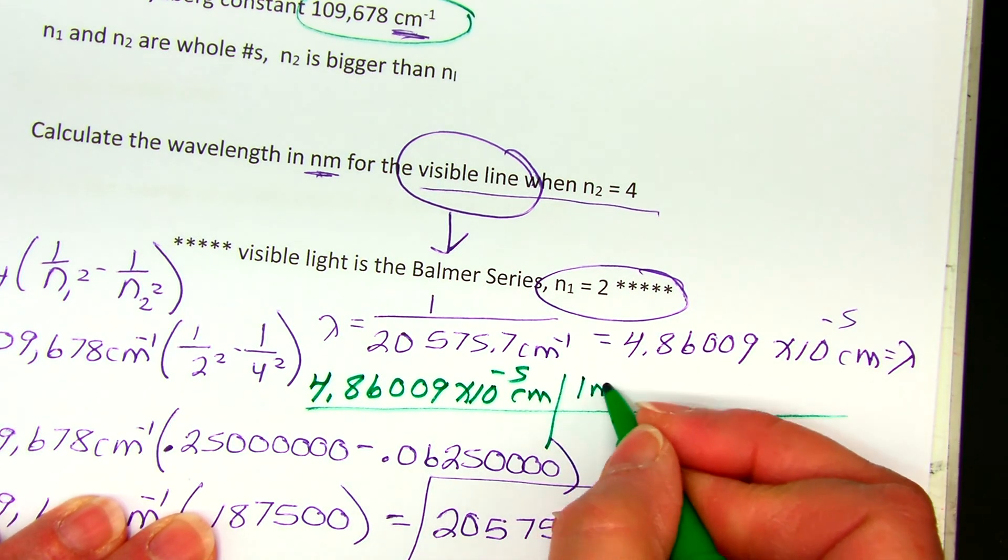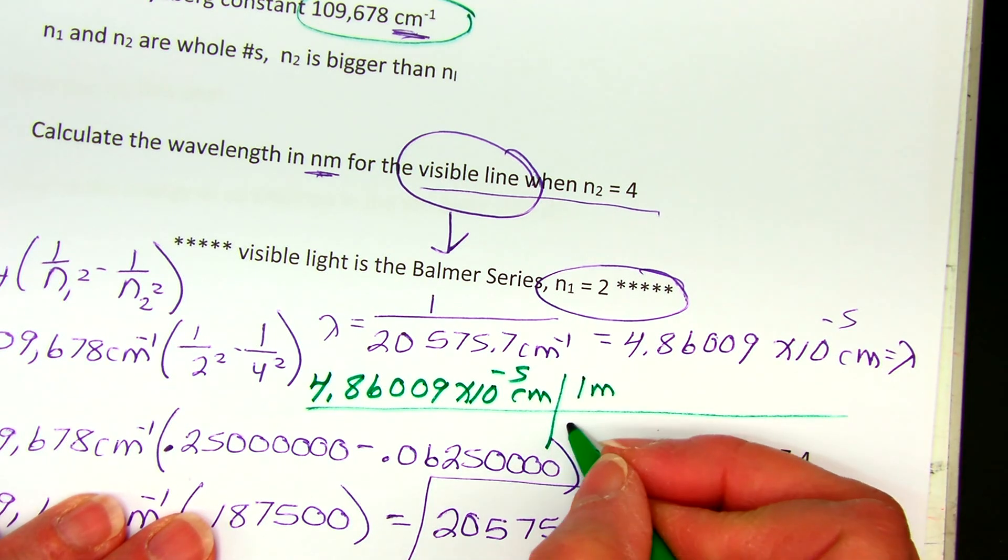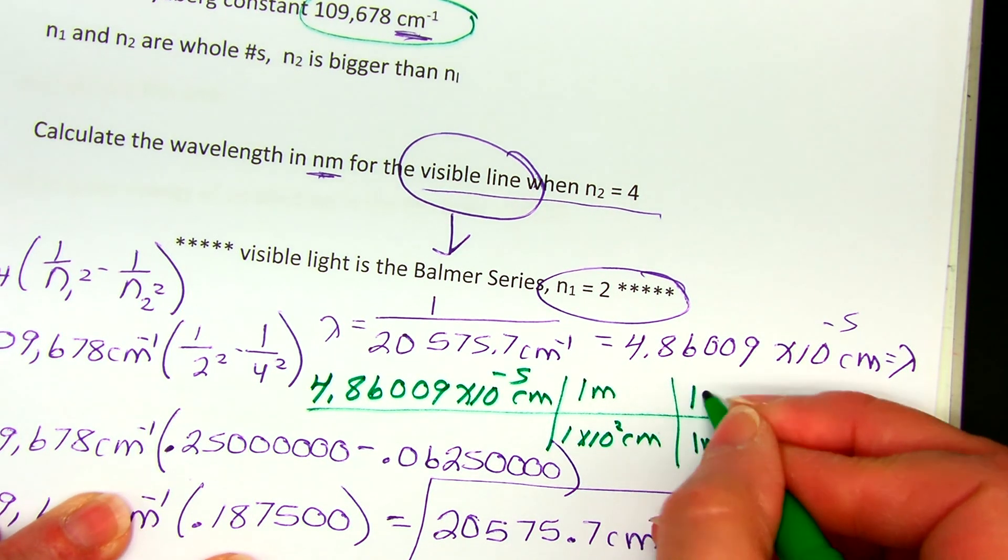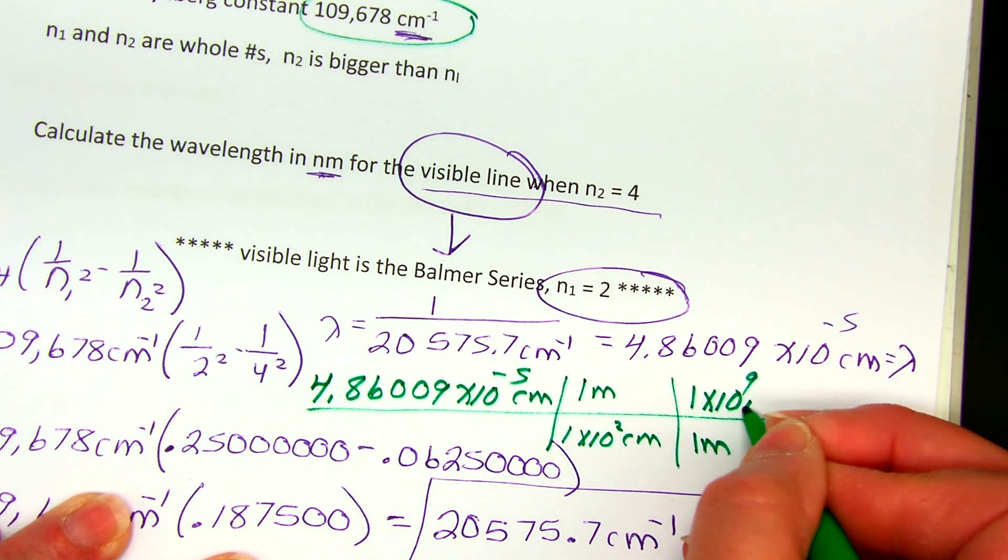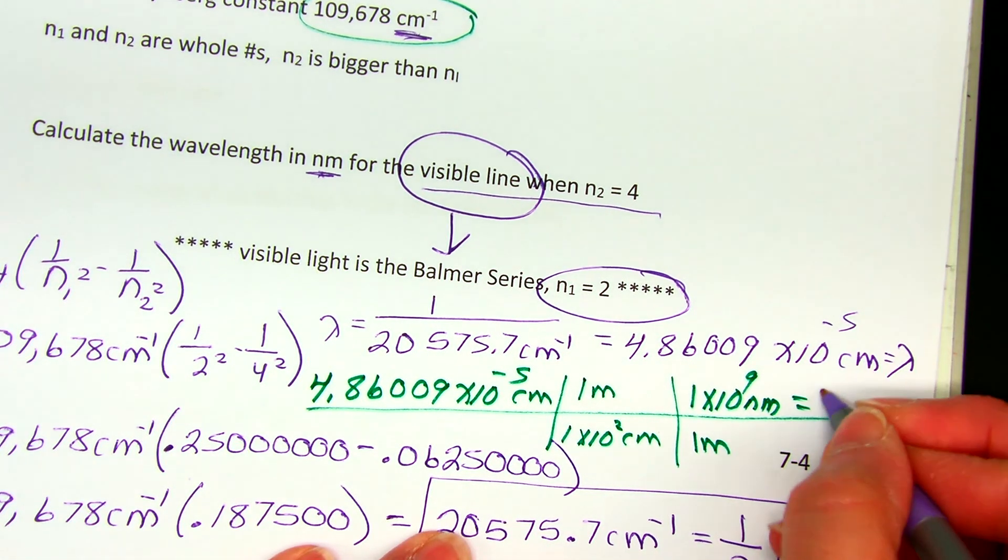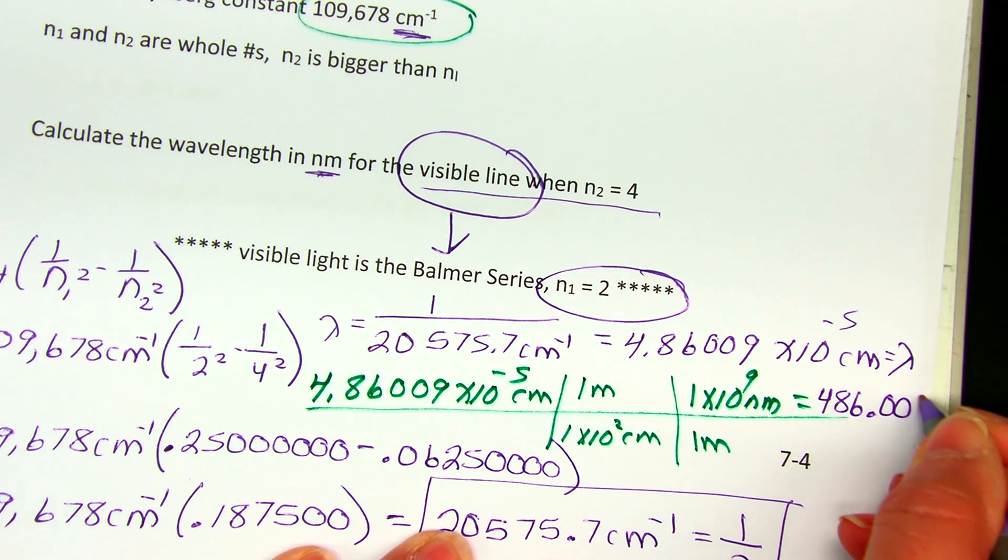So 4.86009 times 10 to the negative fifth centimeters. If you're not familiar with centimeter to nanometer conversions, go through the base: one meter is one times 10 squared centimeters, and one meter is one times 10 to the ninth nanometers. So when I plug this in, I get 486.009 nanometers is my wavelength.